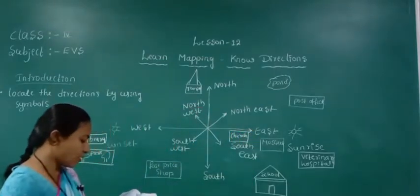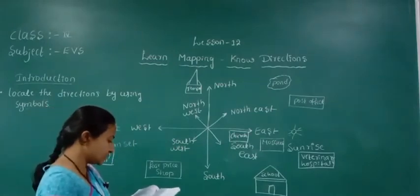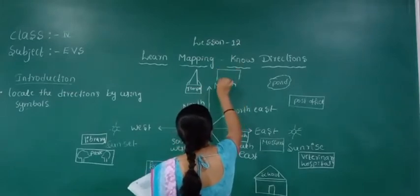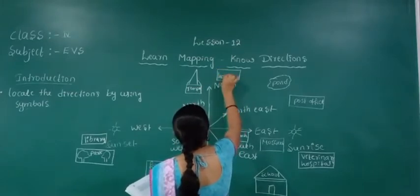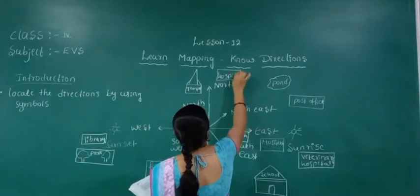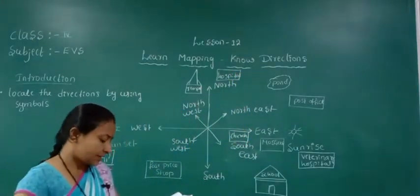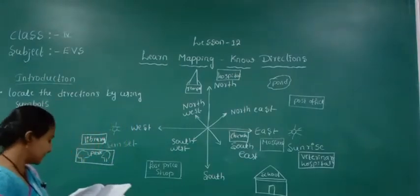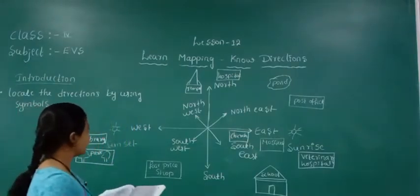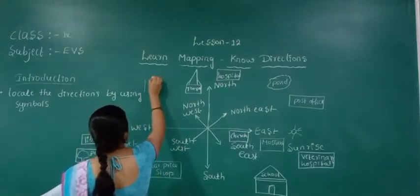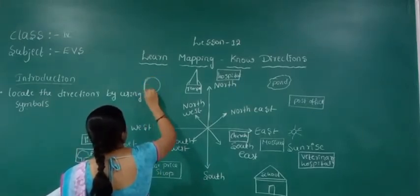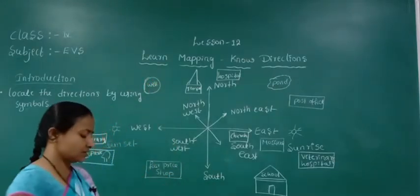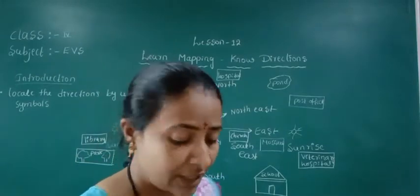Next — hospital. Hospital is in the north side. Next — well. Well is in the north west direction. Students, you can understand here which places come in which directions.